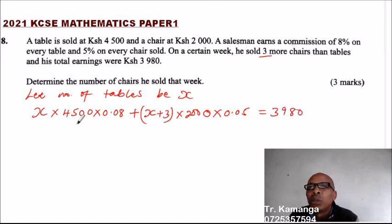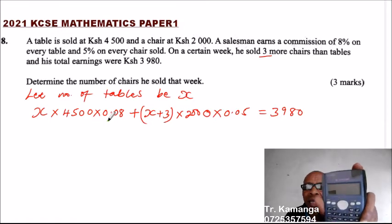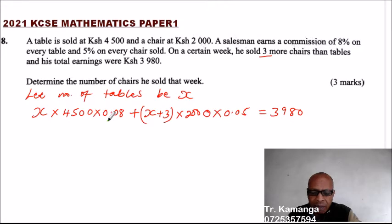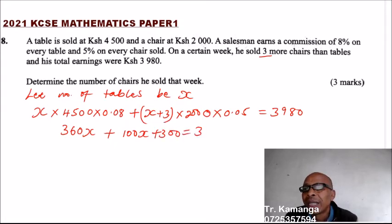So it is upon you now to get the value of X. 4,500 you multiply by 0.08, you use the scientific calculator recommended. So you say 4,500 multiply by 0.08 and that should give you 360. Then 2,000 you multiply by 0.05 and that should give you 100. So 100, the whole of this gives you 100.